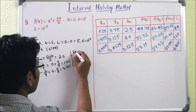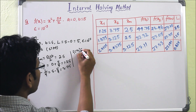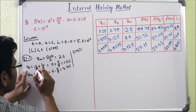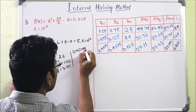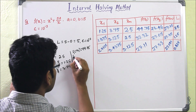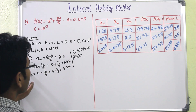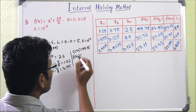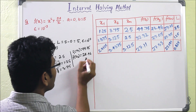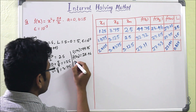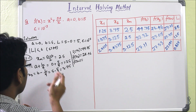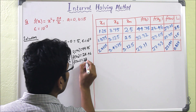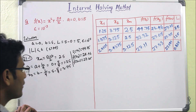Now we find the function values. f(x1): substituting x1 = 1.25 into x² + 54/x gives 44.75. f(x2): substituting x2 = 3.75 gives 28.46. f(xm): substituting xm = 2.5 gives 27.85.